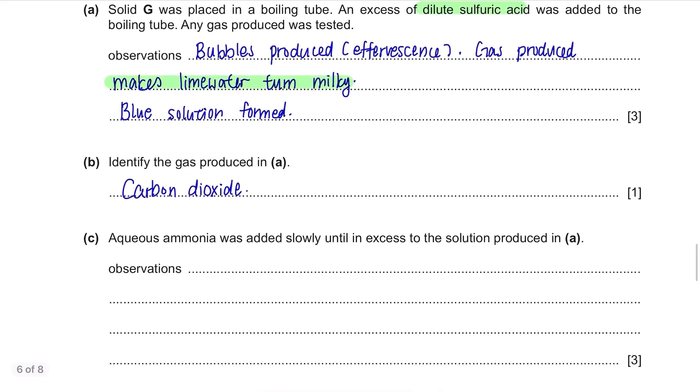Part C. Aqueous ammonia was added slowly until in excess to the solution produced in Part A. So this is the test of cations. If you add ammonia to copper ions in excess, at first blue precipitate will be formed but as time passes, the precipitate will dissolve and a deep blue solution will be left.